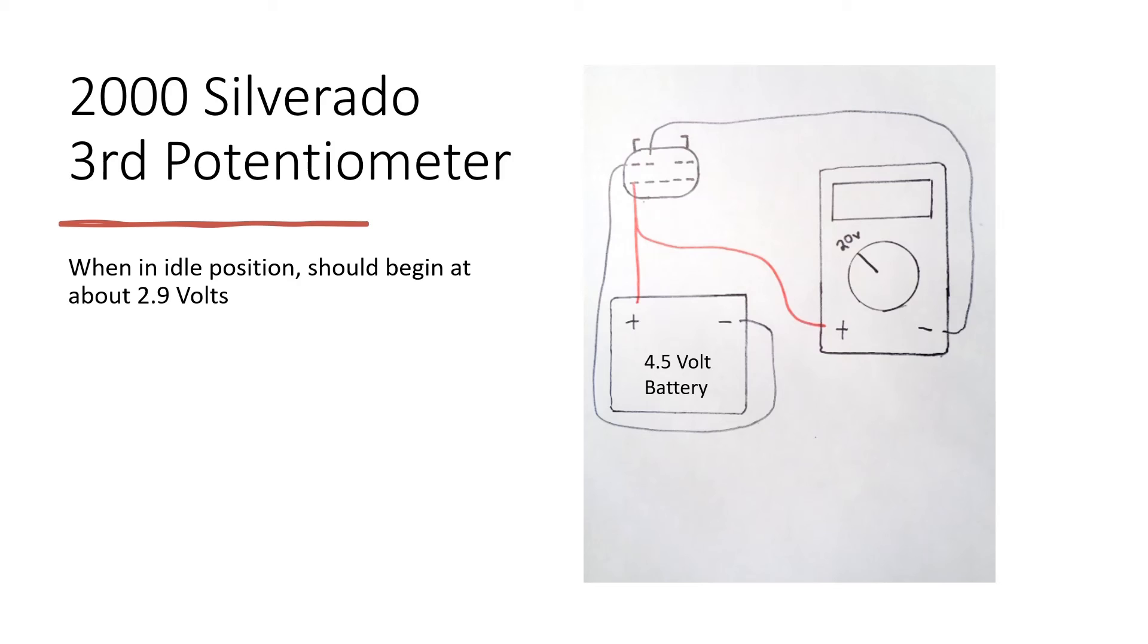It should be reading about 2.9 volts at the idle position before you start twisting, and it should stop at about 0.6 volts at the end position. Remember, check for spikes and glitches during these tests.